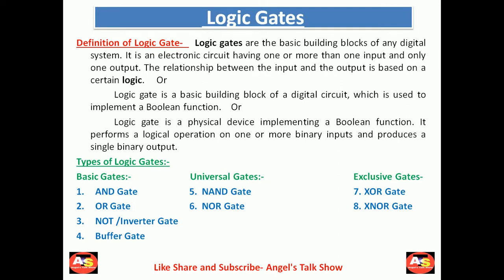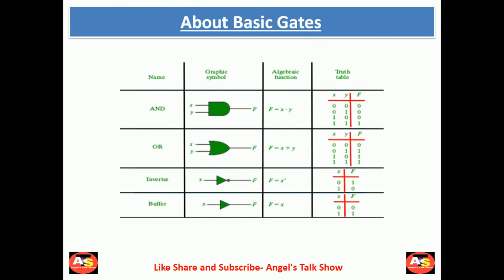That is the definition of logic gates and the different types of logic gates covered in the first slide. Now about basic gates — we have four different basic gates. The first one is the AND gate. This is the graphical symbol of AND gate. We can see that on the leftmost side we are providing inputs, and on the rightmost side we are getting the output. The algebraic function of AND gate is f = x · y, where we calculate the output f by multiplying inputs x and y.